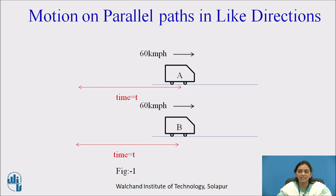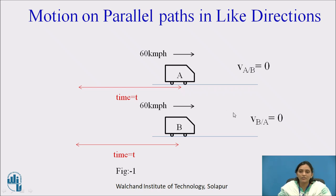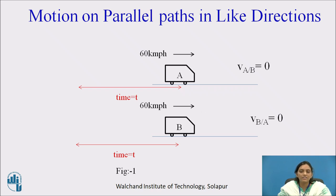Similarly, the observer in B will think that car A is not moving — it is at the same position. So according to the observer, the relative velocity of both cars is 0. The difference between velocity and relative velocity is that when we talk about velocity, the observer is stationary; but when we talk about relative velocity, the observer is also having some velocity.